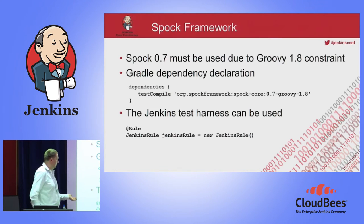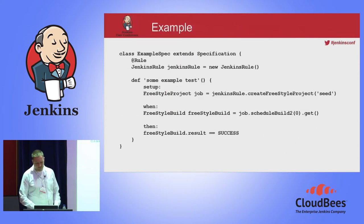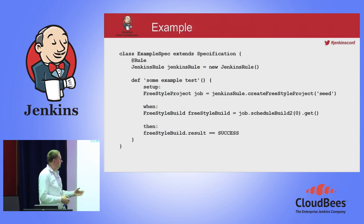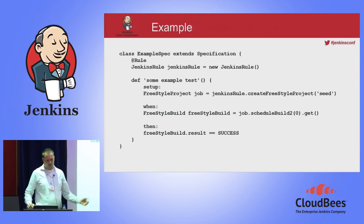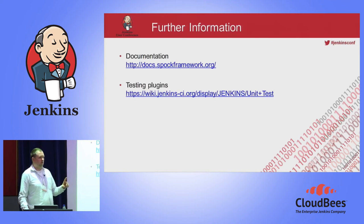The most important part when developing Jenkins plugins is that you may want to use the Jenkins runtime in your tests. You can use the rule annotation from JUnit in your Spock tests. An example test specification — test cases are called specifications in Spock — would look like this: you declare the Jenkins rule to get the Jenkins runtime, then you can create a freestyle project, schedule a build, and check the results. That's the typical structure of a Spock test. For further documentation, go to the Spock website, and there's a special page about unit testing for Jenkins.